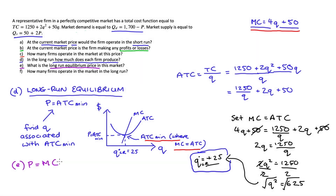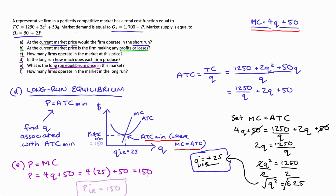Using this result we can find part E — the long-run price. In perfect competition price equals marginal cost. MC equals 4Q plus 50, so substituting Q equals 25: price equals 4 times 25 plus 50 equals 150. That's our long-run equilibrium price P_LR equals 150. We could also substitute 25 into the ATC function and get the same result since all are equal at that point.